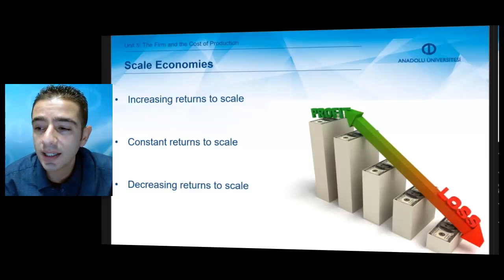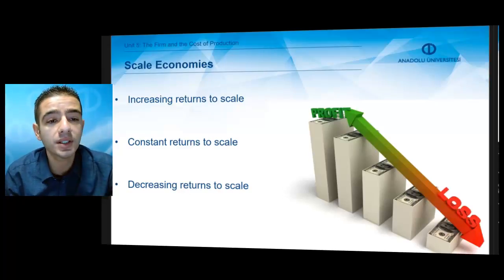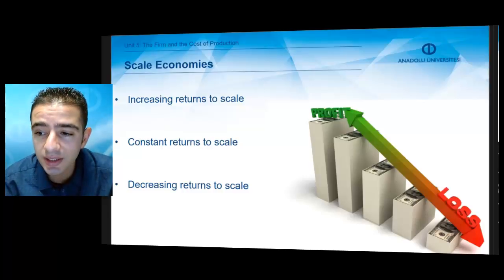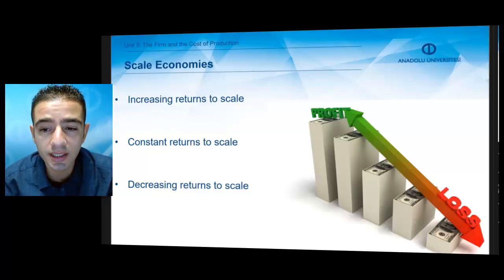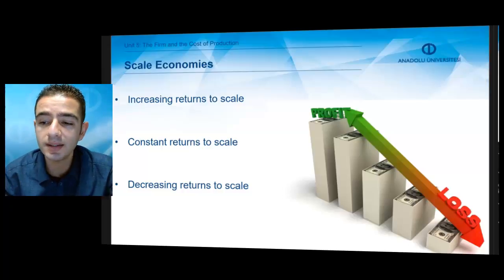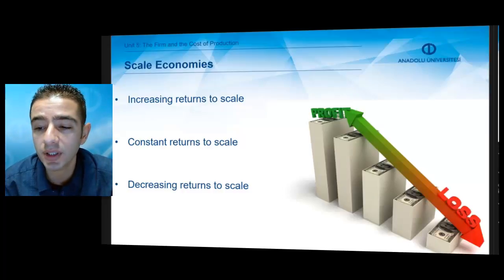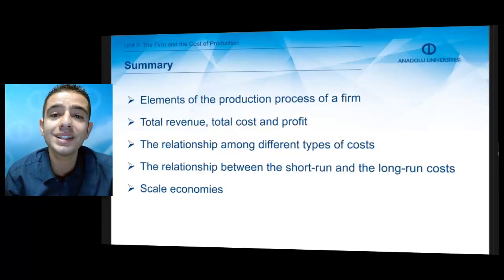Finally, a few words on economies of scale. First, when all inputs are raised by the same percentage and output increases by more than that percentage, we call this increasing returns to scale. If output increases by the same percentage as the increase in all inputs, this is constant returns to scale. If output increases less than the percentage increase in inputs, these are decreasing returns to scale.